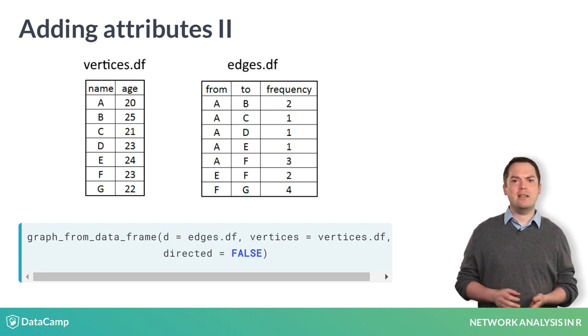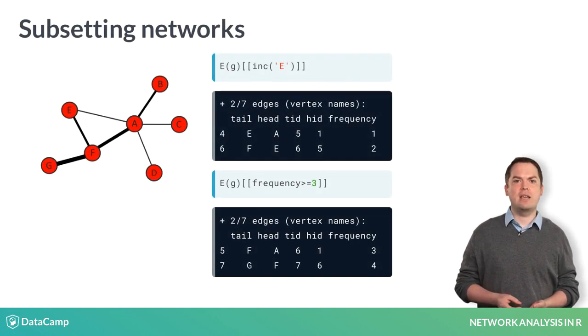Often, you may wish to inspect the iGraph object to identify certain vertices or find edges that have some attribute. This is possible by subsetting the edges of the iGraph object. In the first example, we are looking for all edges that include the vertex E using ink. The name of the vertex needs to be in quotes.